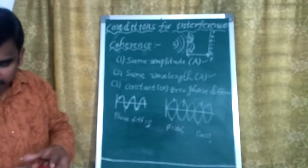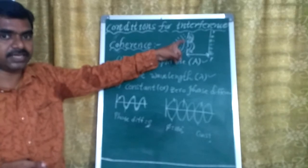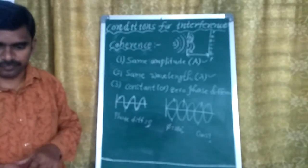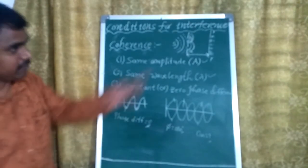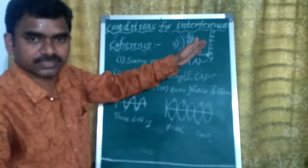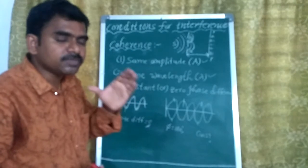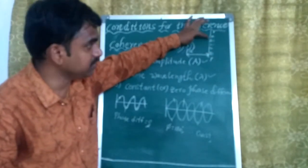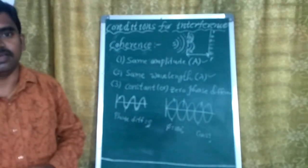The next condition is the amplitude of the interfering waves should be equal. Also, if the waves participating in the interference are polarized light, they should be in the same state of polarization. And the final condition is the screen should be dark — because if the screen is dark, we can clearly observe the maximum intensity and also the zero intensity (dark fringes) between them. These are the conditions for sustaining interference.